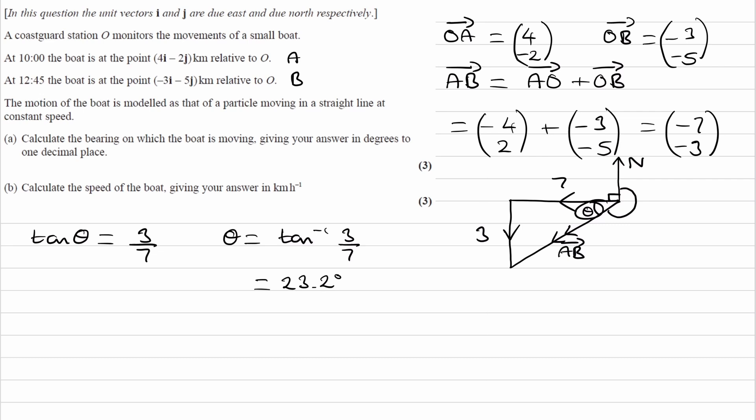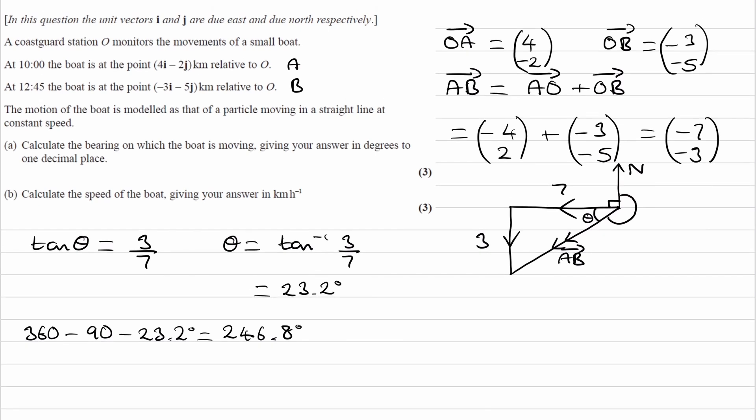So if this is 23.2 degrees and this is 90, if we take those two things away from 360, we end up with this bearing. We do 360 minus 90 minus 23.2, and we end up with 246.8 degrees. This is our bearing, 246.8, our clockwise angle from north. That's part A done.